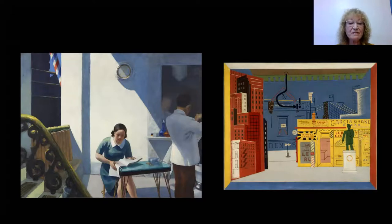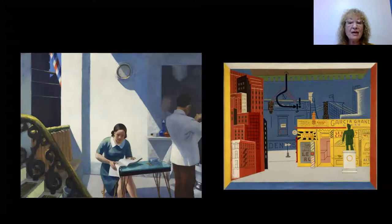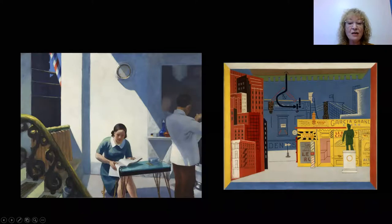Now, let's look at the shapes. Davis uses a variety of flat shapes that are bold. Do you see the rectangles, cubes, arrows, and circles he used? Hopper used shapes in a different way than Davis. Do you see how the shadows and light create triangles and rectangles, and how the circles, like the clock, repeat throughout the composition? He repeats many of these shapes subtly.